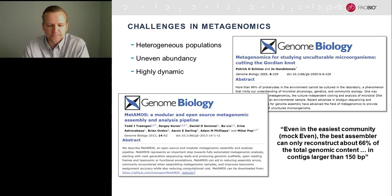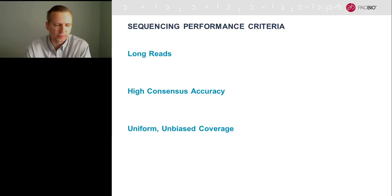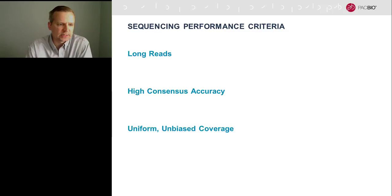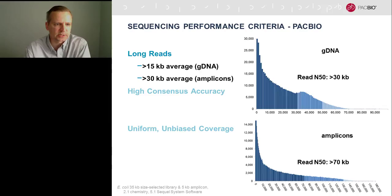Three criteria matter when evaluating sequencing technology for metagenomics: read length, accuracy, and bias. PacBio currently achieves average read lengths greater than 15,000 bases for genomic DNA and about 30,000 bases for amplicons — roughly two orders of magnitude longer than Illumina sequencing. The read N50 for genomic DNA exceeds 30 KB, and for amplicons it exceeds 70 KB, meaning half the amplicon data is contained in reads greater than 70,000 bases.